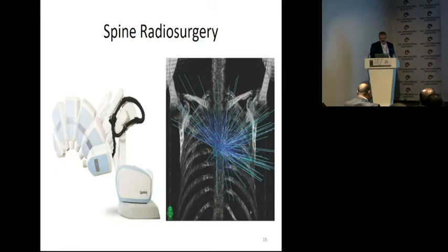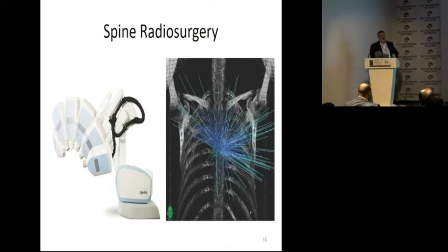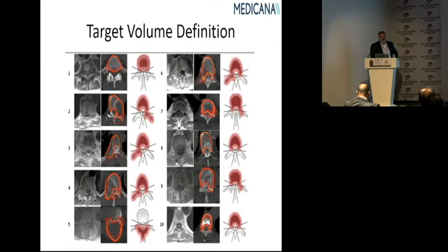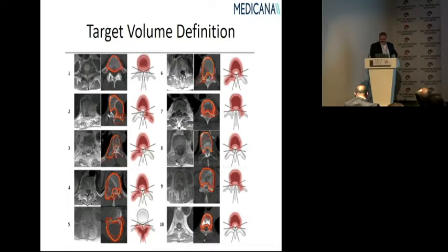This is a typical image for spine radiosurgery using a CyberKnife machine. Different beams come from different angles, converge, and focus on the tumor while preserving the normal structures. People working in spinal radiosurgery have also come together to propose target volume definition guidelines, specifying how to contour the target according to the type of spinal metastasis.